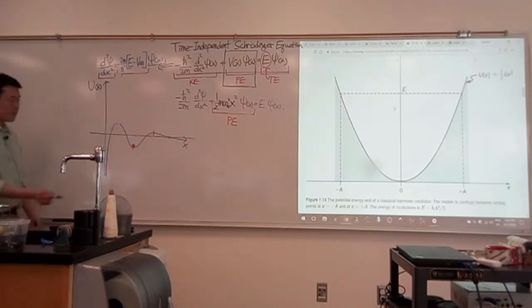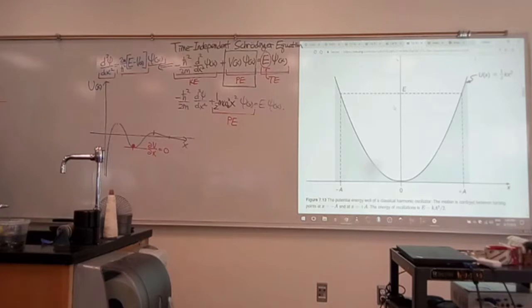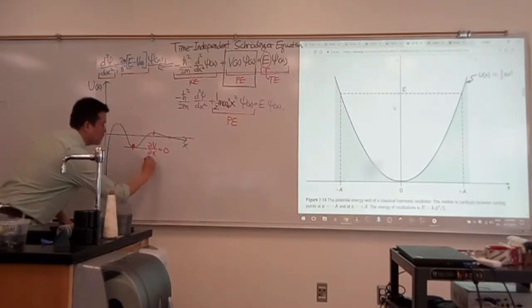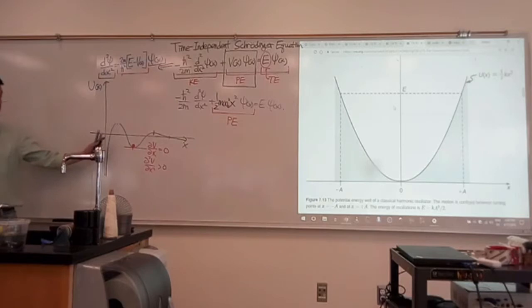At stable equilibrium, these are some of the features. One is that the first derivative of the potential function is zero—net force has to be zero. And the second derivative of the potential function has to be positive, because if it's negative, it would be unstable equilibrium.